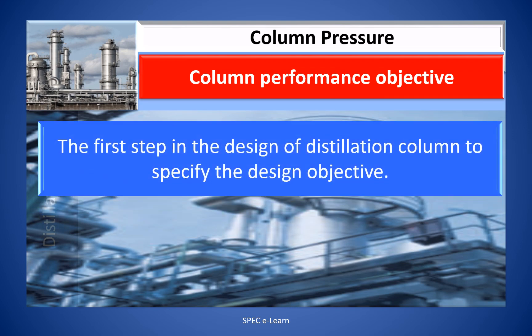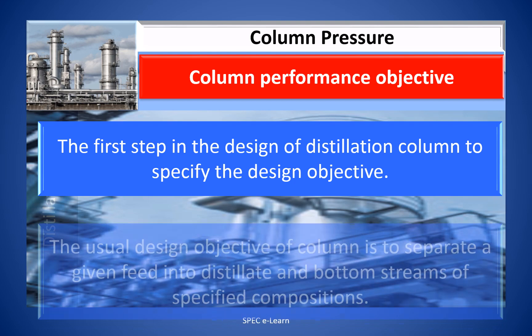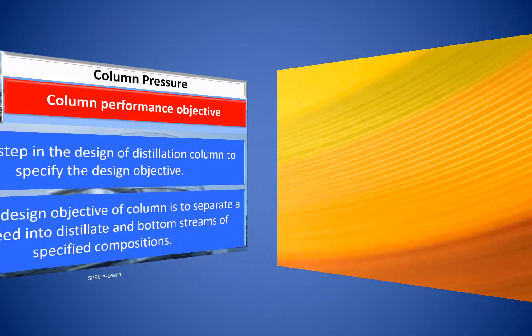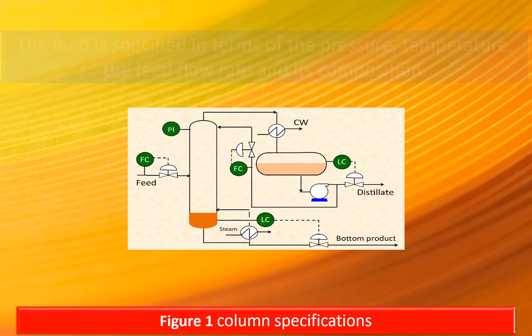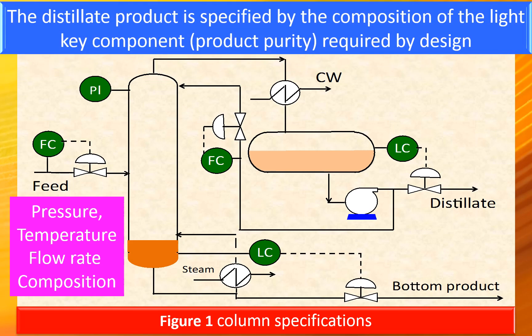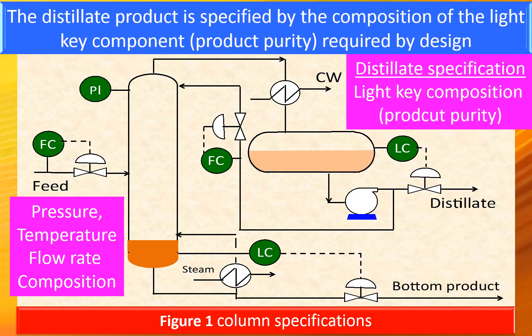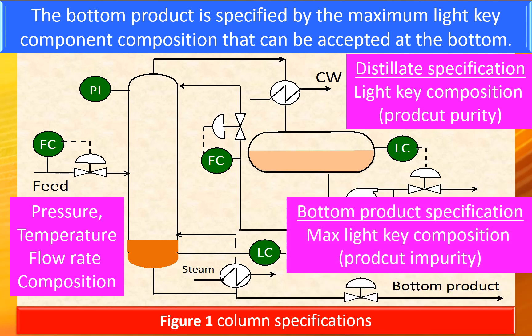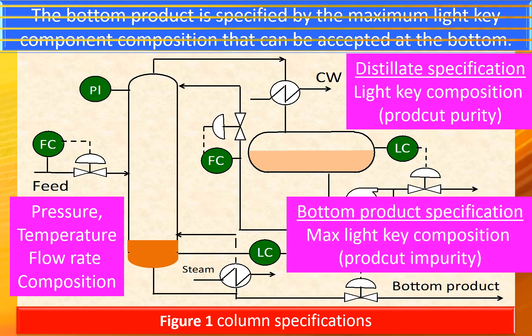The first step in the design of a distillation column is to specify the design objective. The useful design objective is to separate a given feed into distillate and bottom streams of specified compositions. The feed is specified in terms of pressure, temperature, feed flow rate, and its composition. The distillate product is specified by the composition of the light-key component — the product purity required by design. The bottom product is specified by the maximum light-key component composition, that is the impurity, that can be accepted at the bottom.